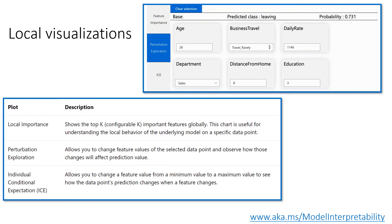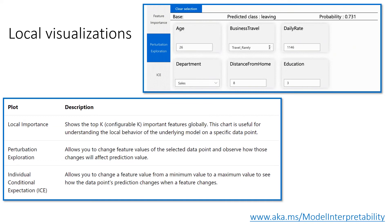In terms of plots, we have the local importance, perturbation exploration, and individual conditional expectations. All of these are visualizations that allow you to better understand what your model is doing and why it is predicting a specific type of result.